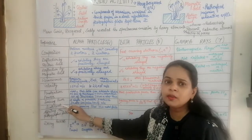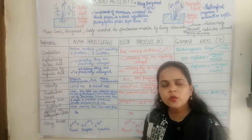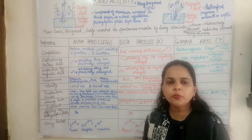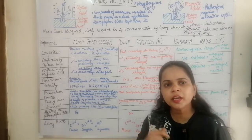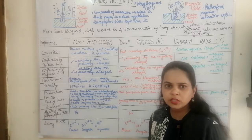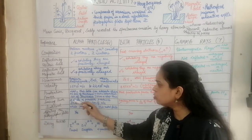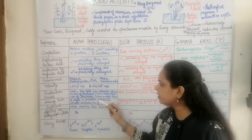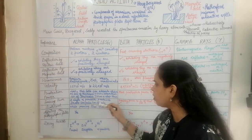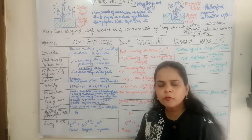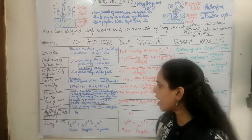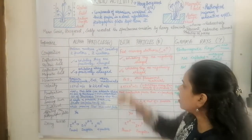The next property is ionizing power. Ionization means producing ion pairs when particles pass through air. The alpha particle, being positively charged with two positive charges, can produce 20,000 ion pairs per centimeter in air — demonstrating an extremely high ionizing power.